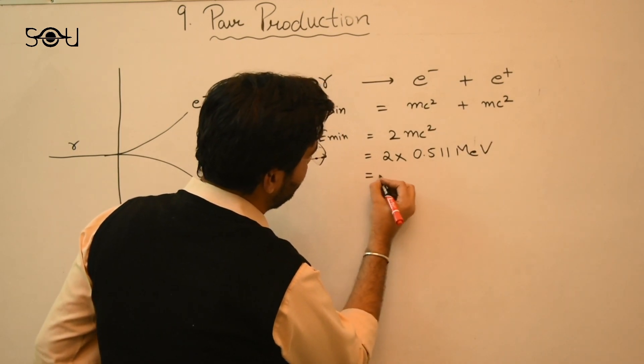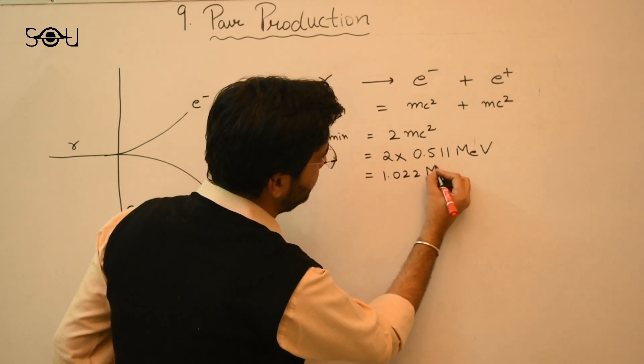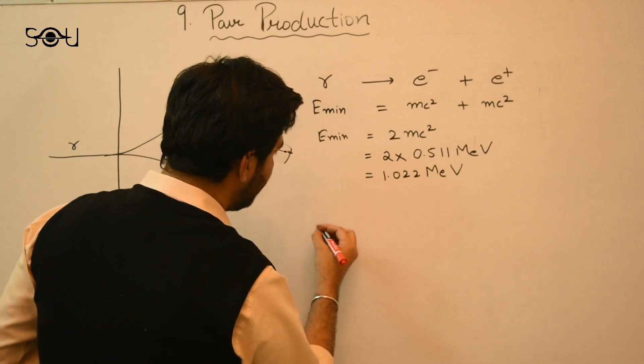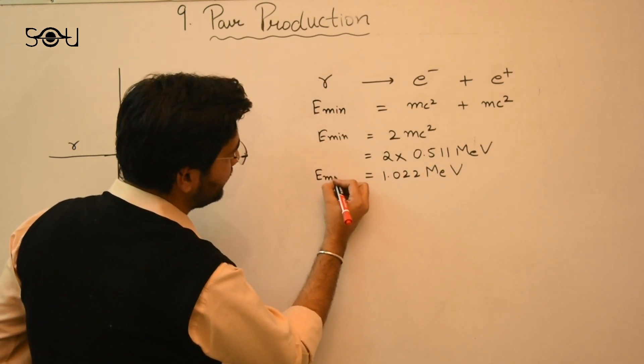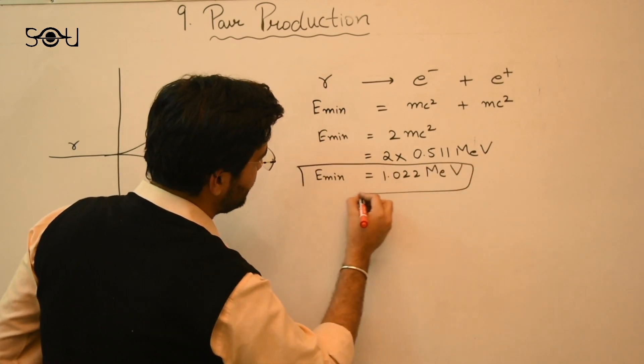So this turns out to be 1.022 MeV. So this is the minimum energy that is required to create a pair of electron and a positron.